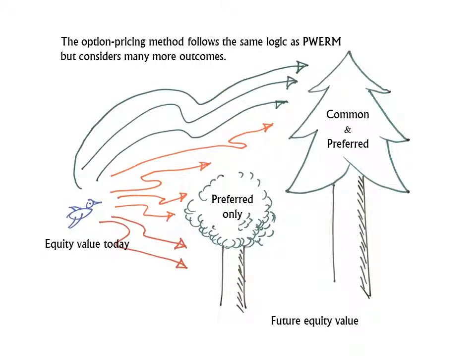The option pricing method follows the same logic as the PWRM with a few key differences. First, instead of considering a handful of scenarios, the OPM considers a very large number of scenarios with only incremental differences between each one. In the PWRM, the risk associated with future scenarios is captured in two adjustments: the probability assigned to the scenario and the discount rate used to convert future value to present value. In the OPM, the probability weights do virtually all the work of adjusting for risk, and the discount rate is less important.